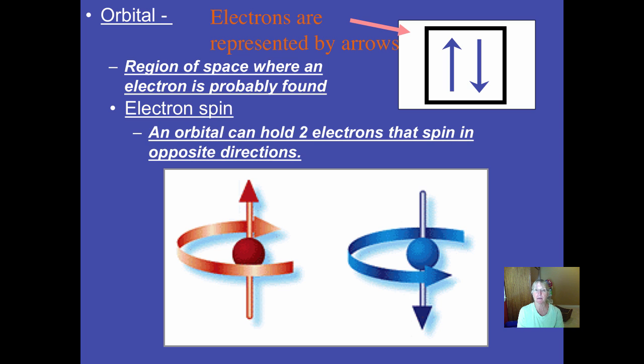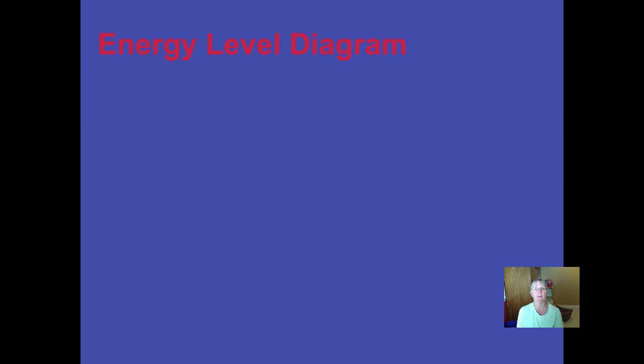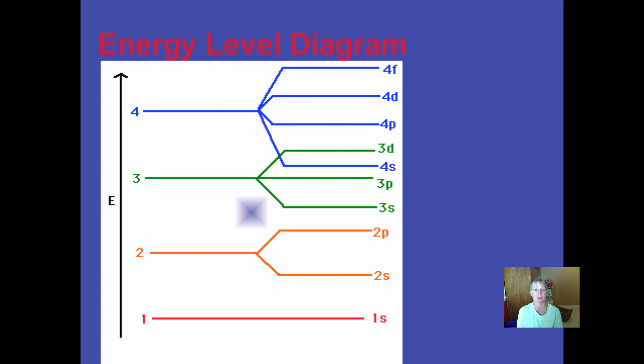So the maximum number of electrons an orbital can hold is two. They could be empty and have zero electrons. They could be half filled and have one. Or they can be filled with two. And then no more. You can't get more than two electrons per orbital.